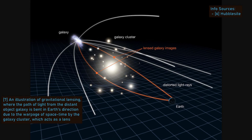When using a star as a lens, astronomers call this gravitational microlensing. In this case, we are observing a star behind a star we are using as a lens.